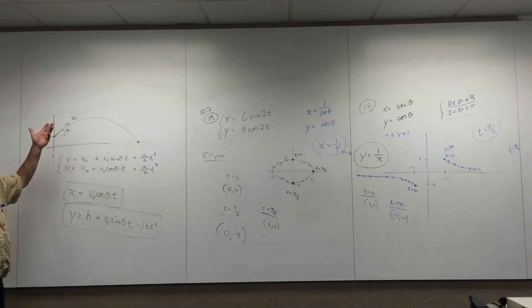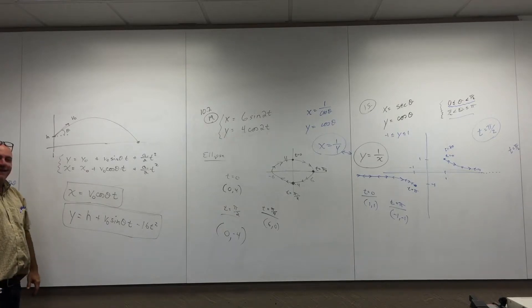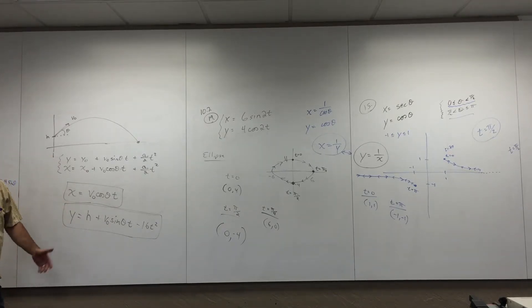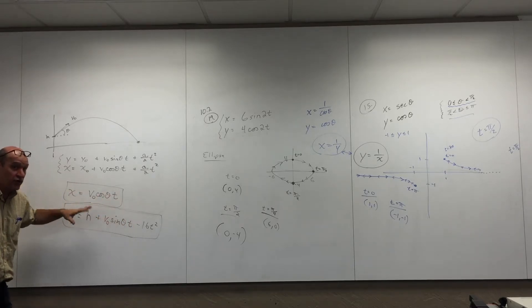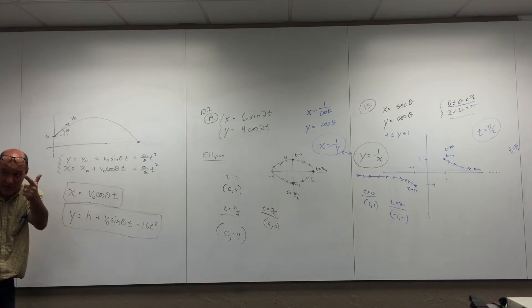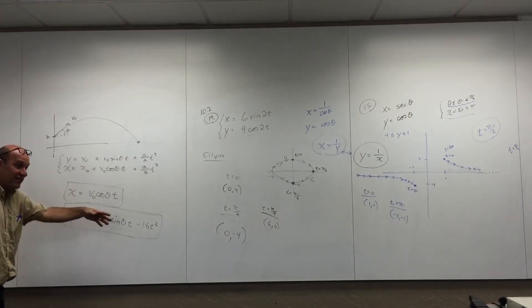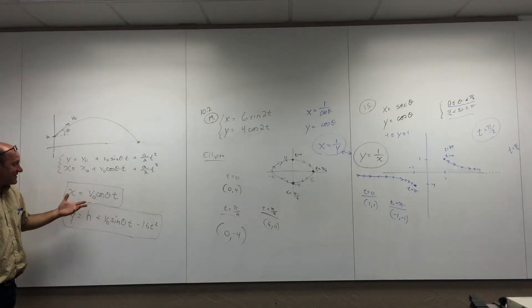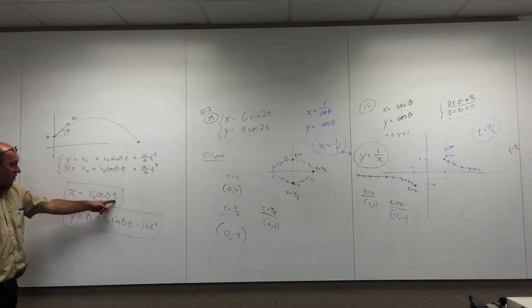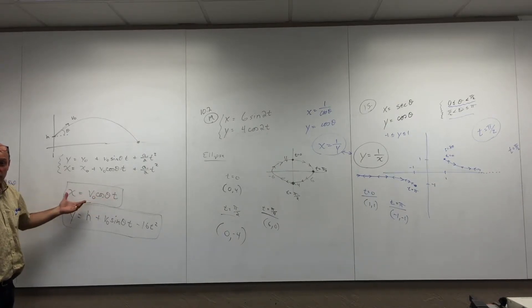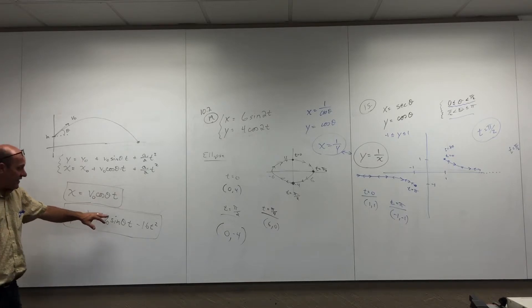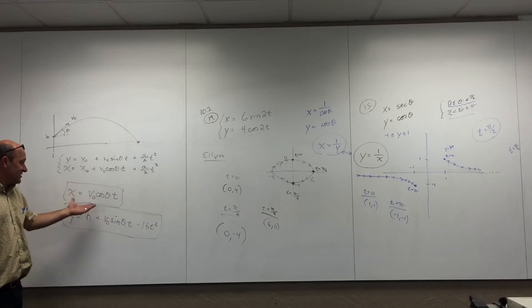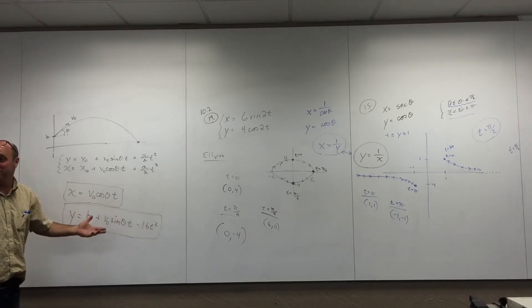Could you eliminate the parameter and prove it's a parabola? Solve for t from the x equation: t = x / (v₀cosθ). Plug that in for t in the y equation — instead of t's you'll have x and x², which proves it's a parabola.